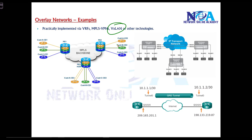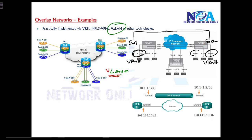Another example is VXLAN, which stands for Virtual Extensible LAN. This is similar to the concept of VLANs. Normally, if VLAN 11 users on switch one need to communicate with VLAN 11 users on switch two, we connect them with an L2 link and configure a trunk link, which allows users of the same VLAN to communicate over that trunk link.